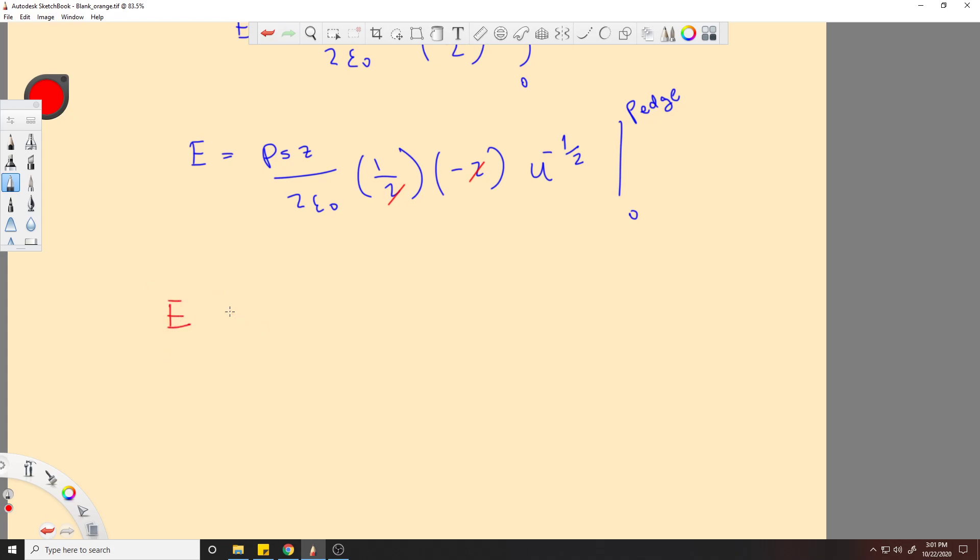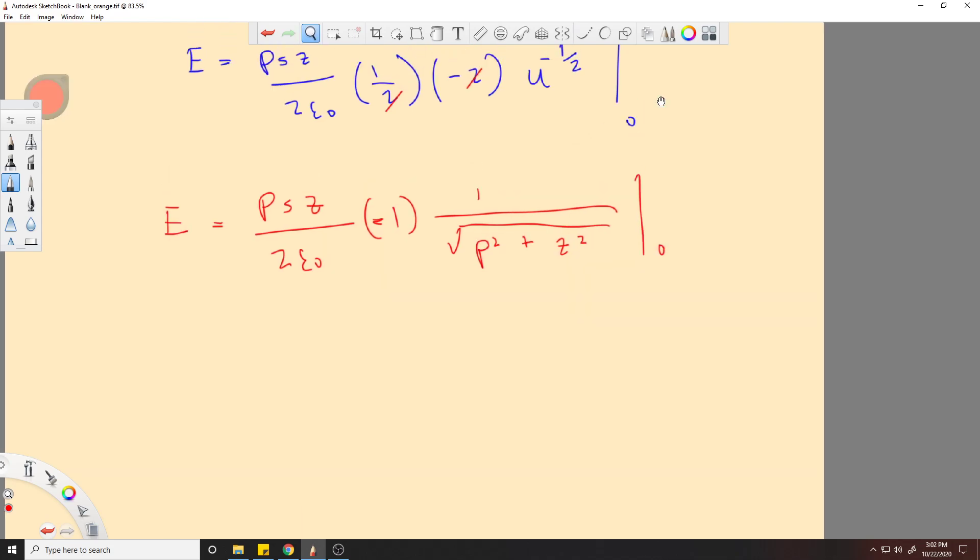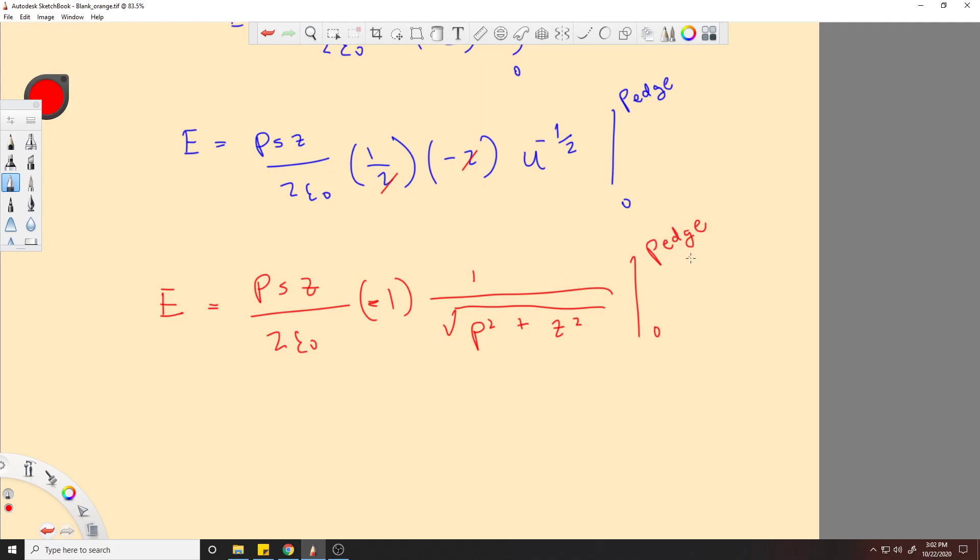So these will cancel. We plug in our u again. This will not. This will be a negative one. And then we plug in our u, which will be rho squared plus z squared to the negative one-half. Or you can write it out, I'll just write it like this. I'm just going to put it in fraction and square root. And we still haven't evaluated the actual value there, so now we'll do that.